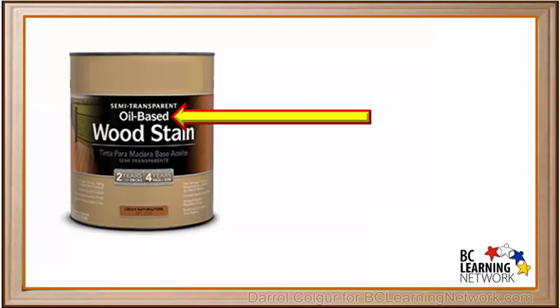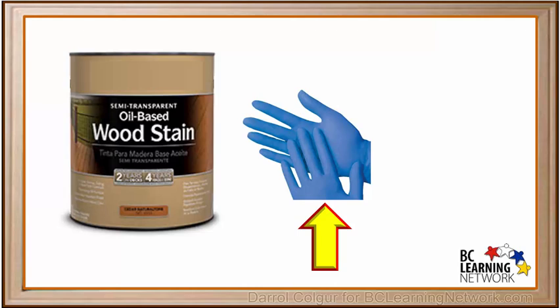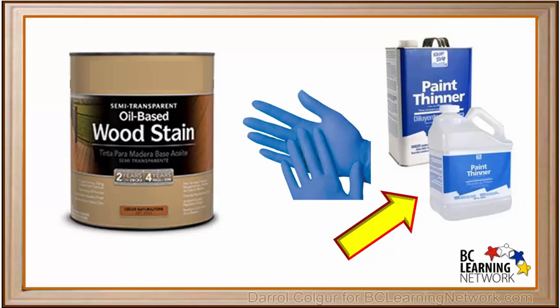Some products, like this type of wood stain, are labeled as oil-based. This means that this stain is fat-soluble only and will not dissolve in water, even when it is still wet. It is recommended that you wear gloves when using oil-based stains or paints, because they cannot be cleaned off your hands using soap and water. Paint thinner or similar solvents must be used to clean brushes when using oil-based stains and paints. When using any product, it is very useful to know whether it is fat-soluble or water-soluble.